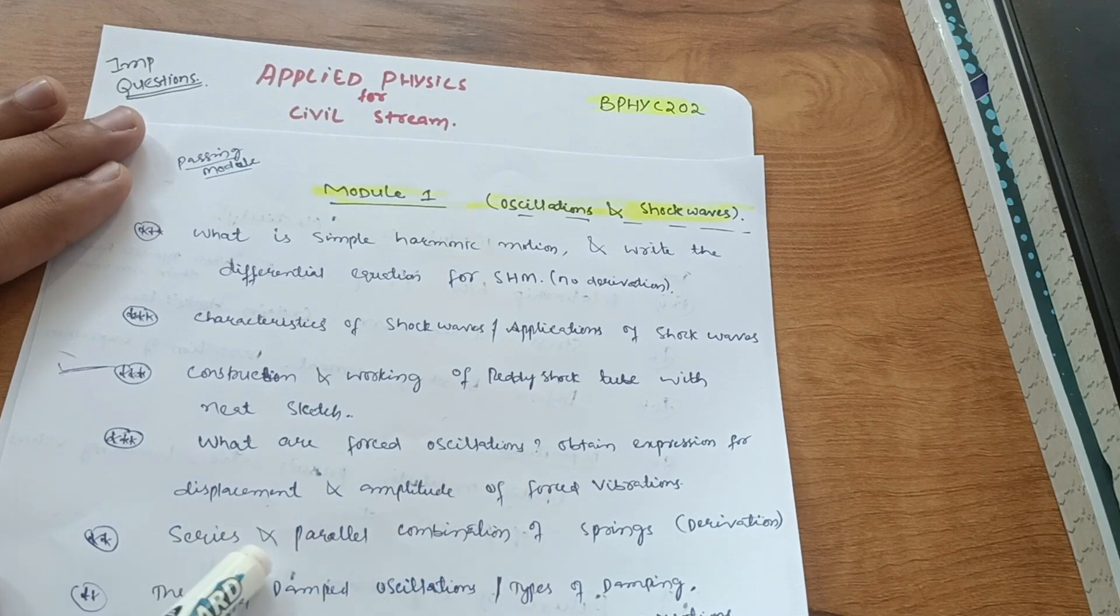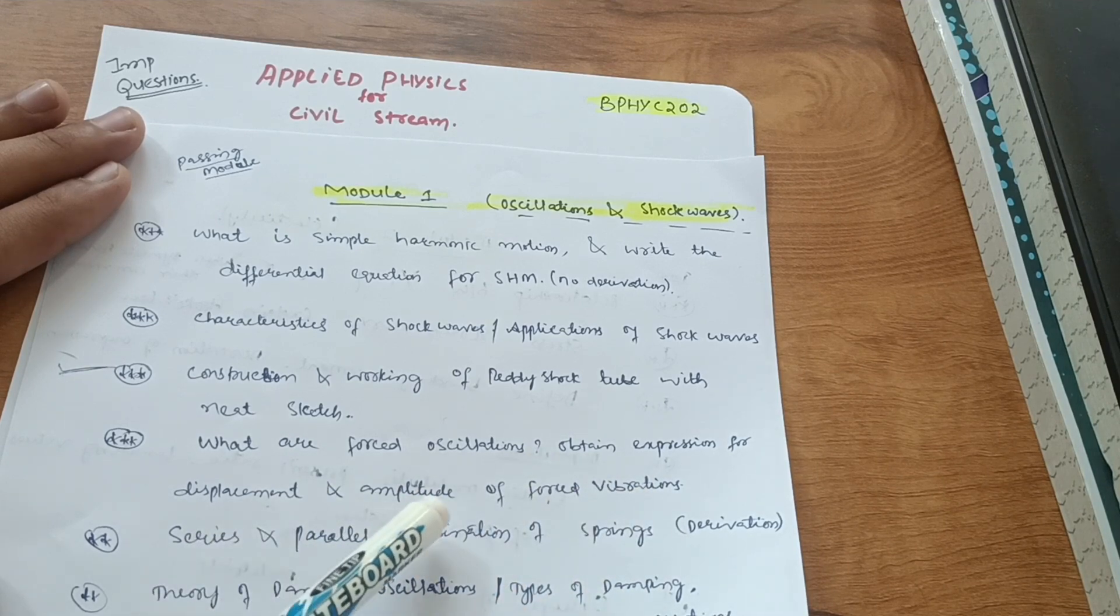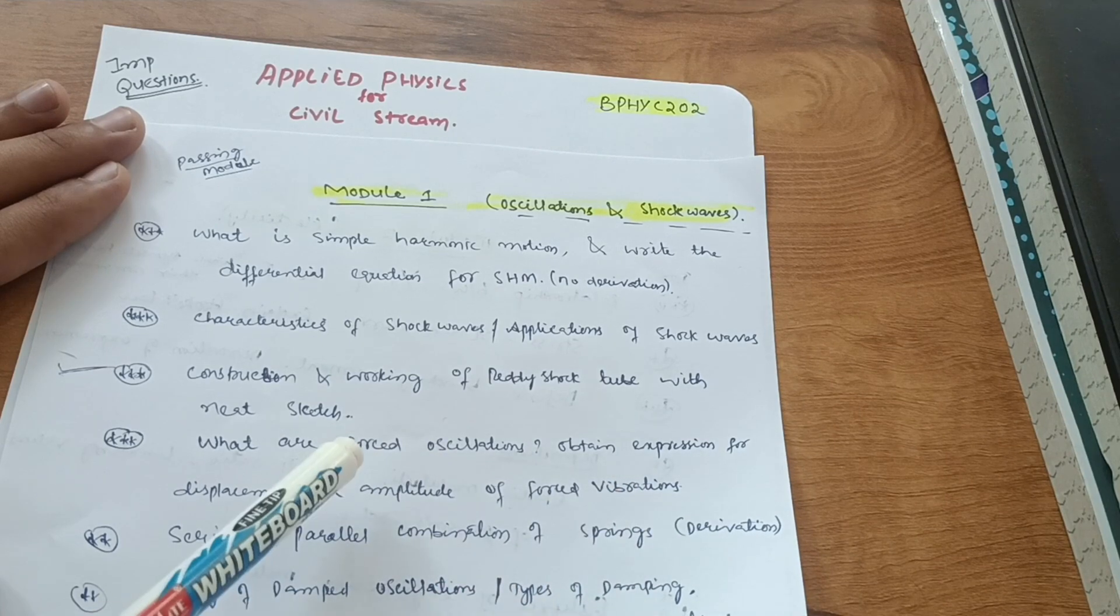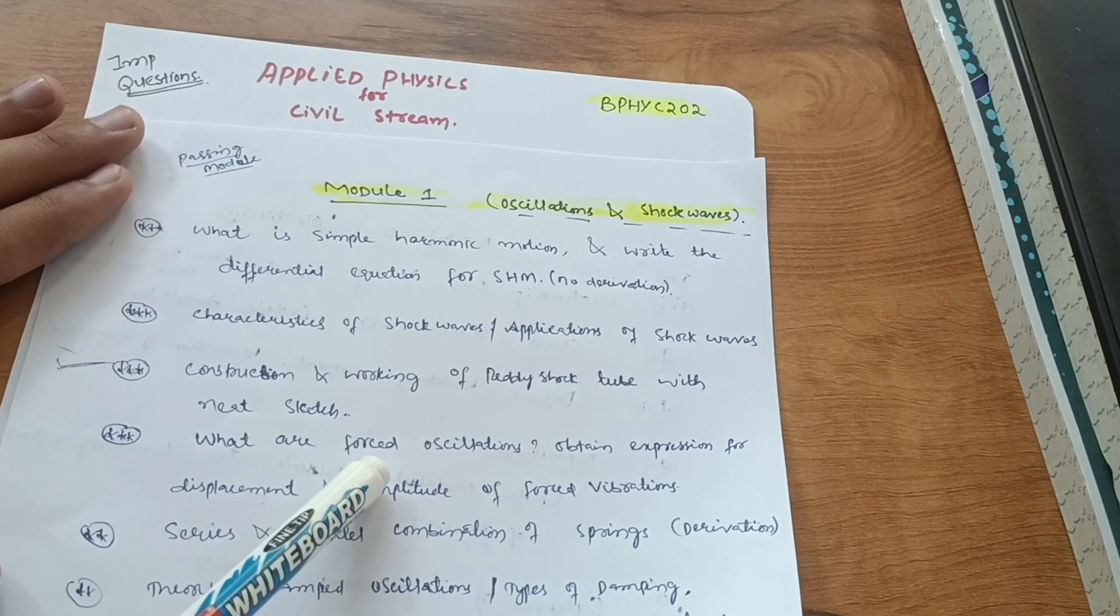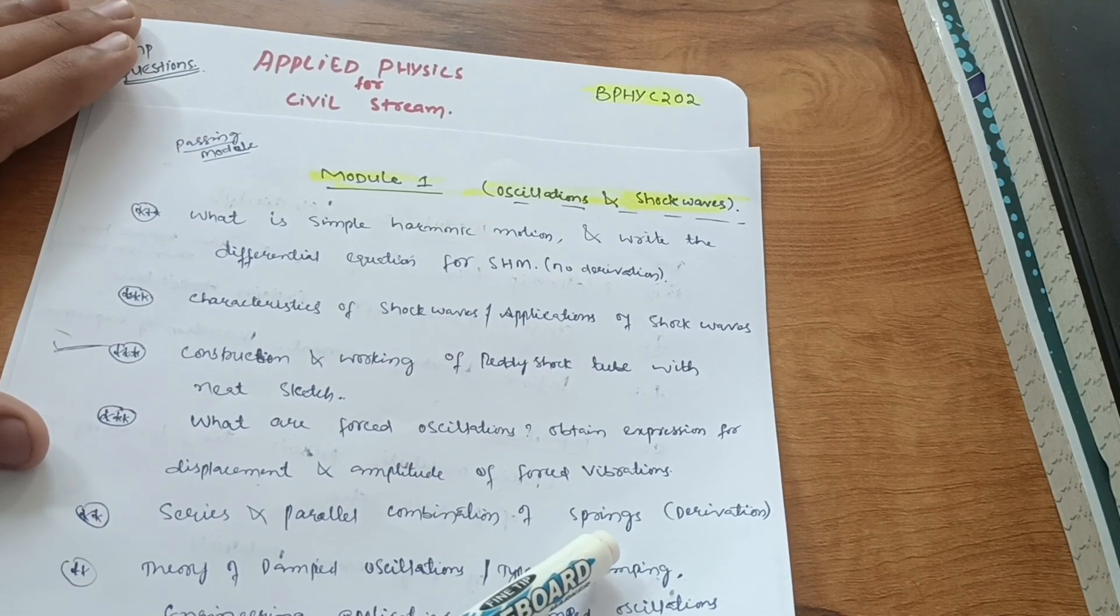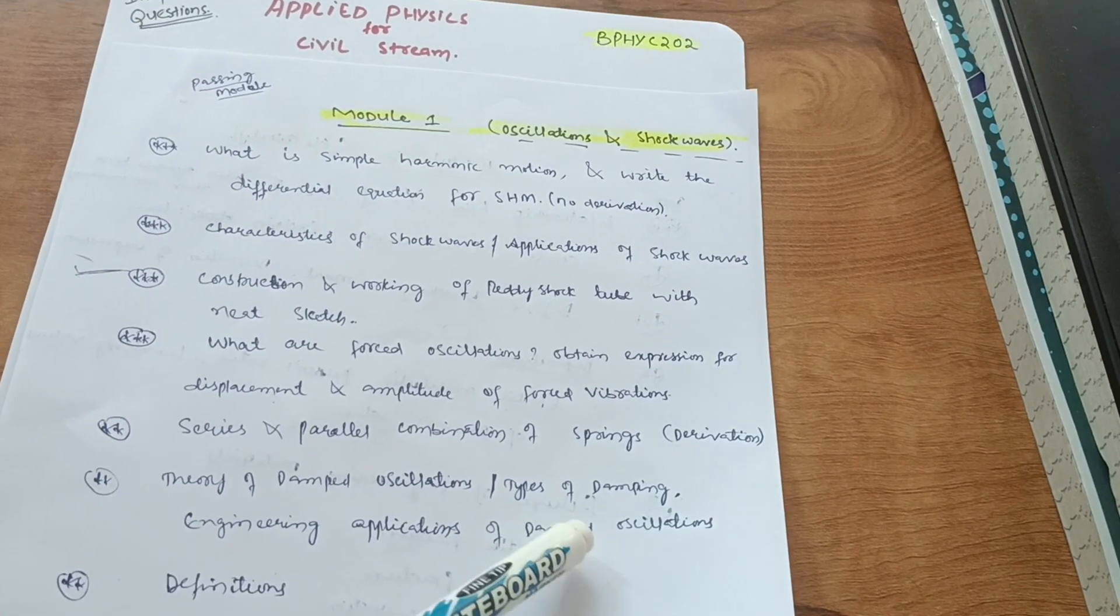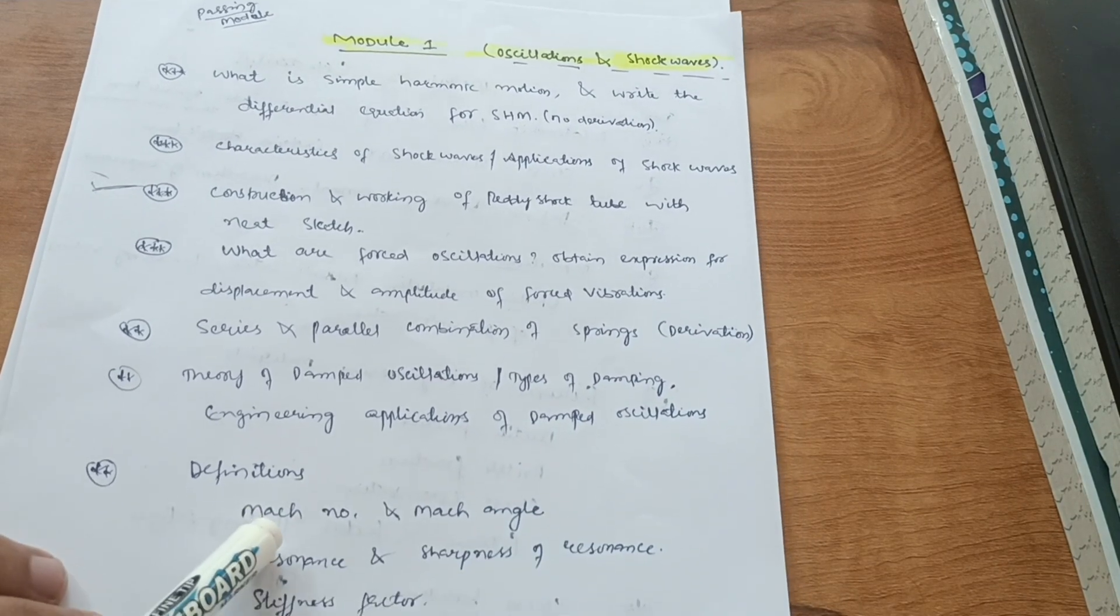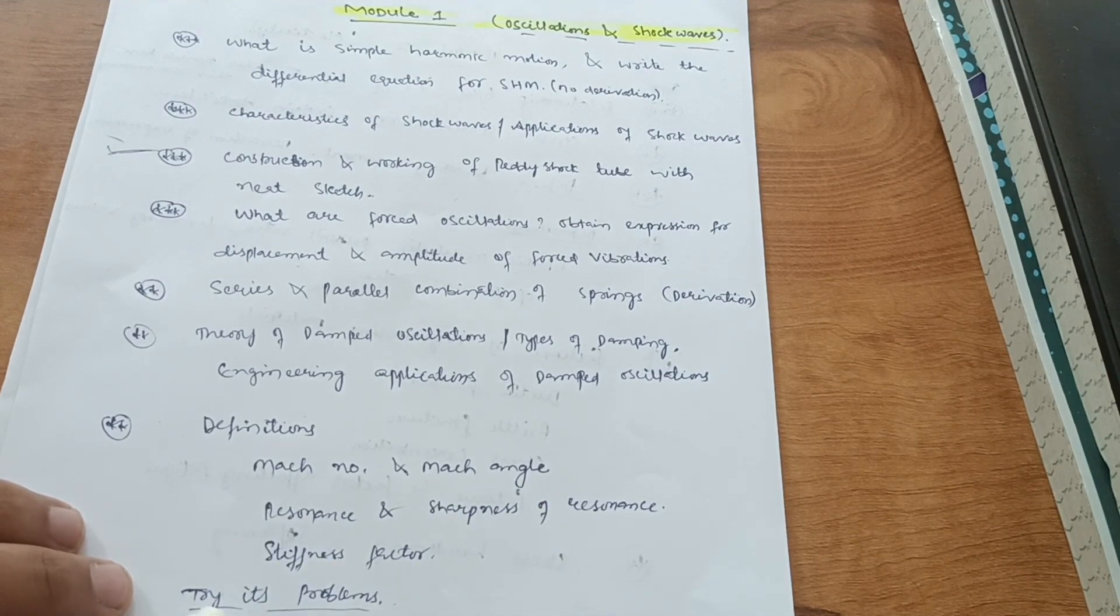Obtain expressions for displacement and amplitude of forced vibrations. Sometimes they will give obtain expression for amplitude of forced vibrations and sometimes obtained expression for displacement. What are forced oscillations will be the definite question. Then series and parallel combination of springs, there is a little bit derivation. Then theory of damped oscillations, types of damping, and engineering applications of damped oscillations.